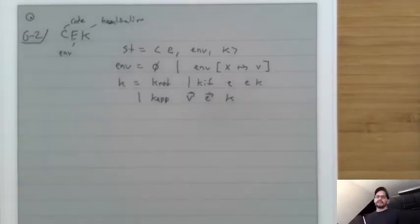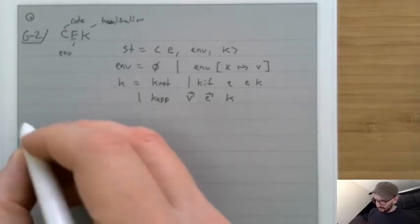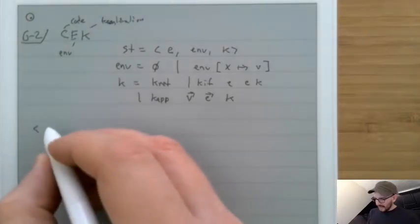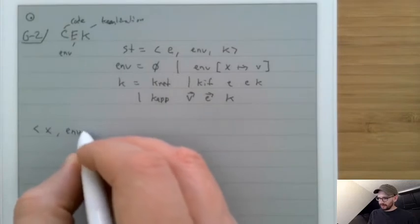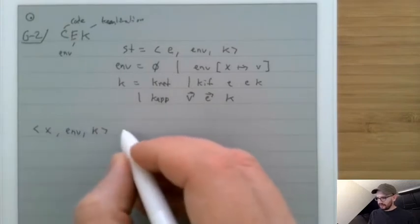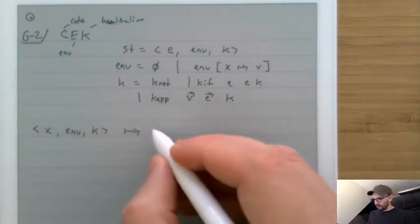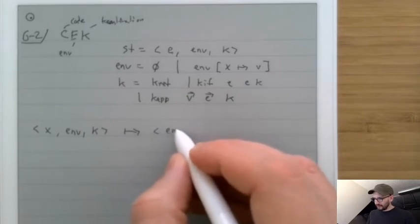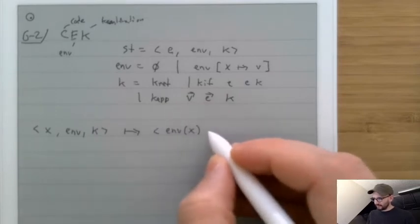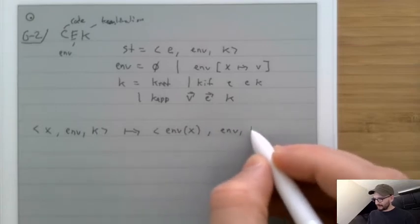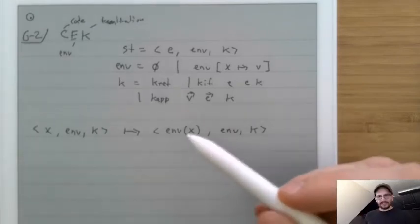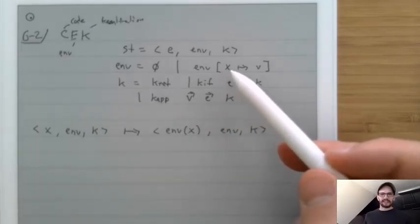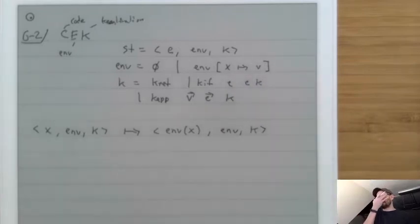The crucial special rule is the one for variables. If you have a variable X, some environment, and some continuation, you look up X in the environment — and that's all. The lookup function walks down the linked list, finds the matching X, and returns its value. All other rules are fairly straightforward.